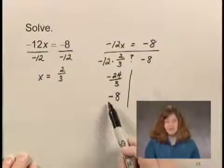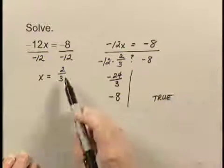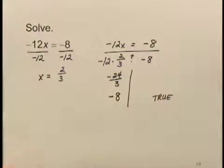So since negative 8 equals negative 8 is true, we can say that 2 thirds is the solution of the equation.